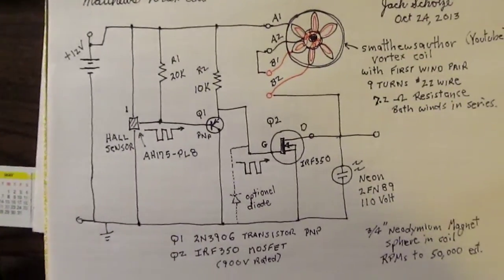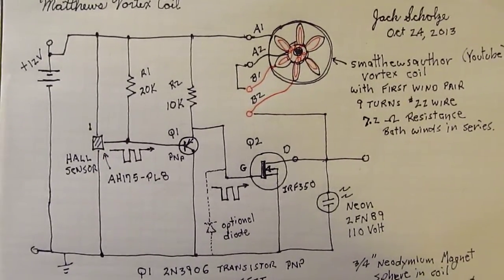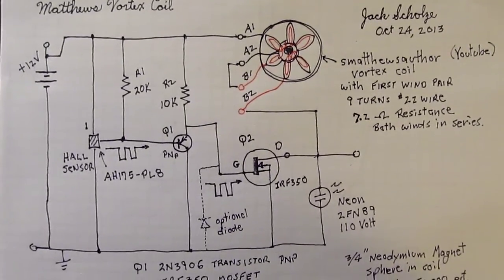Here is the schematic diagram. The schematic shows two transistors. The hall sensor puts out a negative pulse every time the south pole of the magnet goes by.